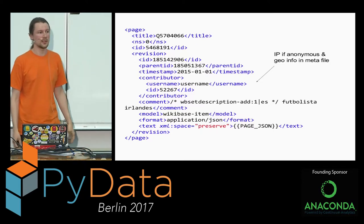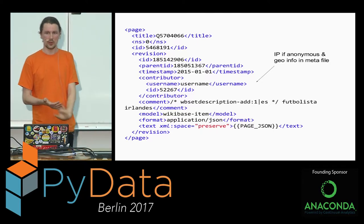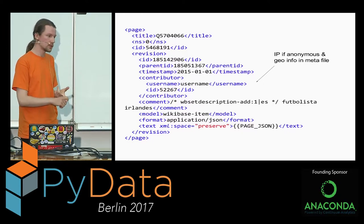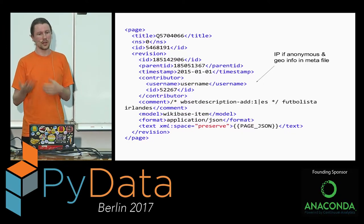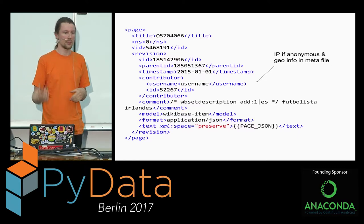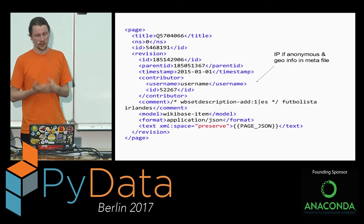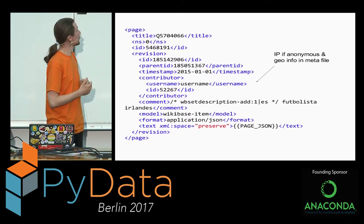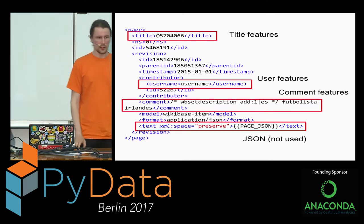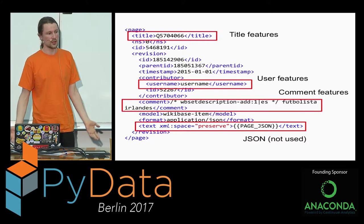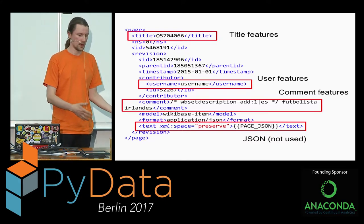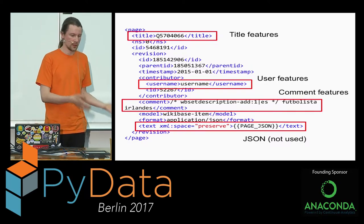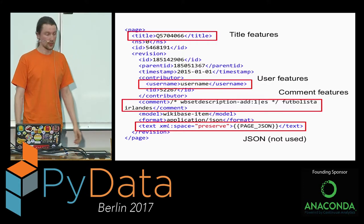This is how the data looks: each page from the dump has a title and information about the revision — who was the user who suggested it, or the IP address if not logged in. We also have comments and the actual content of the entire page in JSON format. For machine learning features, we can take the title, since some pages may be more controversial and targeted more often by vandals — for instance, the page about President Trump is probably edited more often than a page about snails.